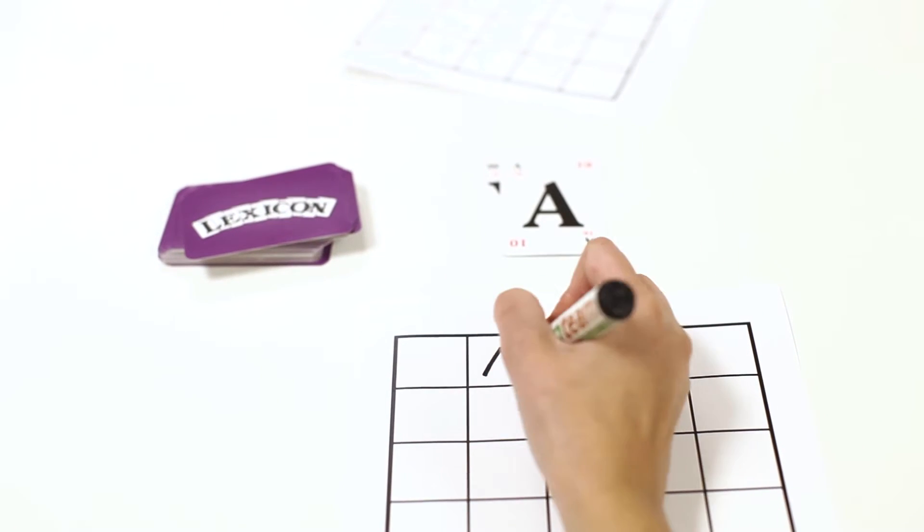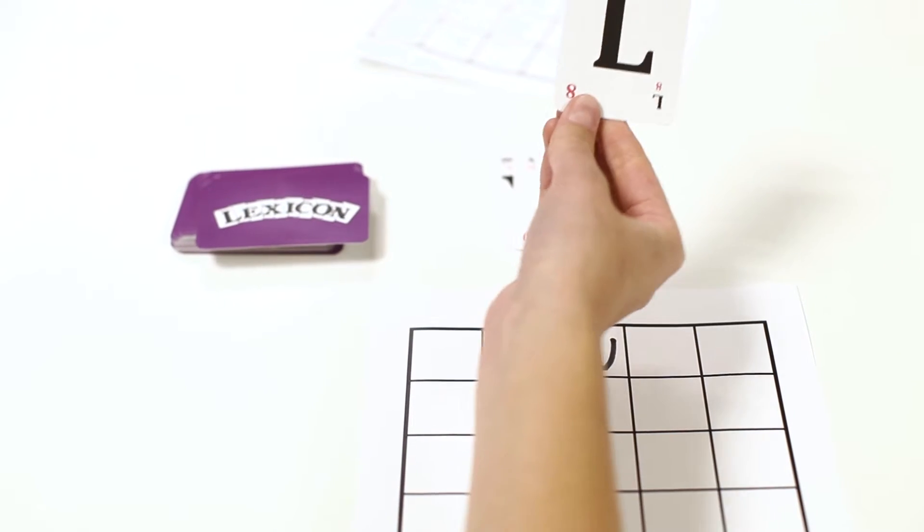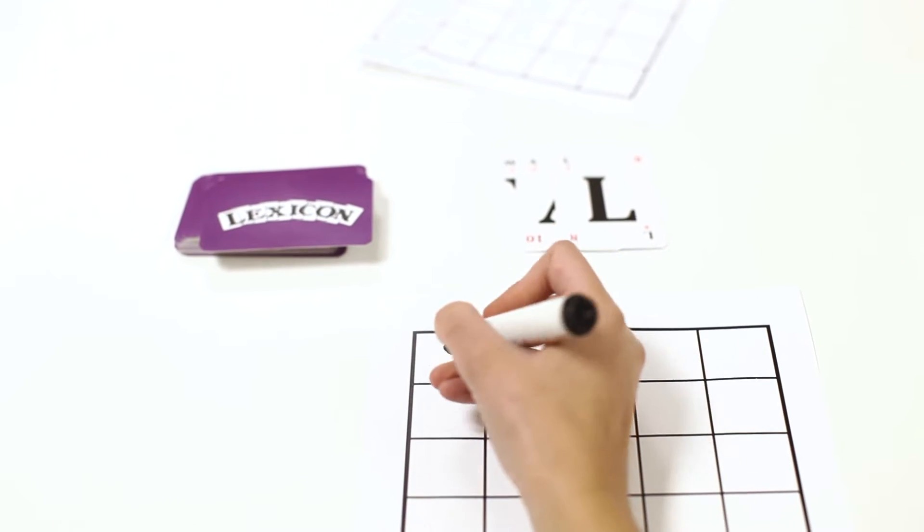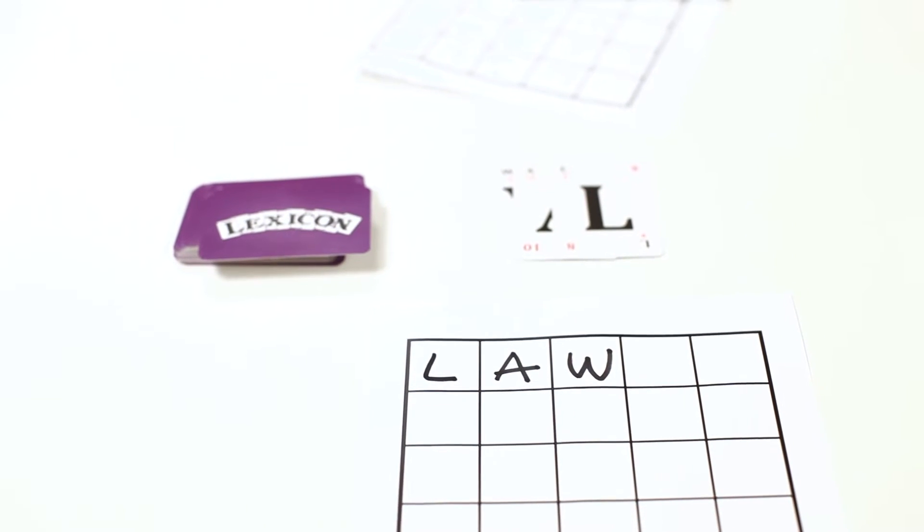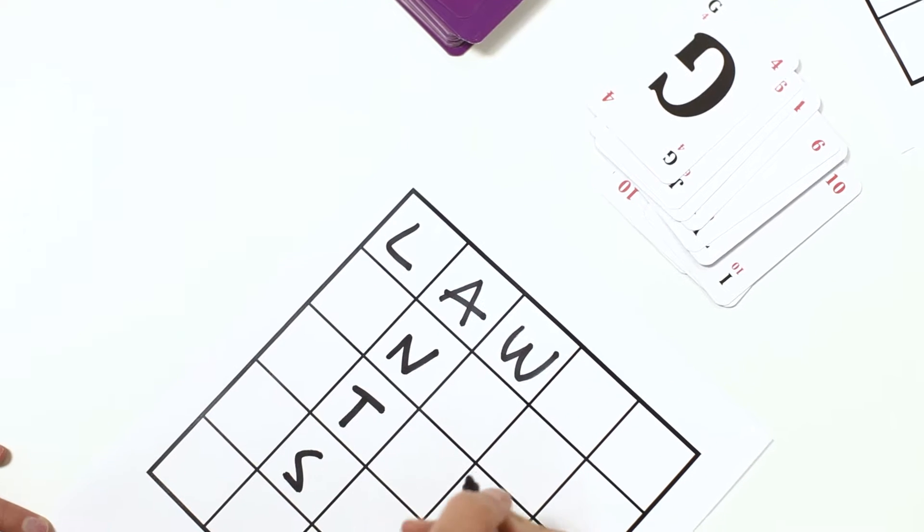Each player must draw on paper a grid of 25 squares. Shuffle the deck and then one player must write the first letter in any one of the empty spaces on their grid. Play continues until 25 cards have been turned and 25 squares filled.